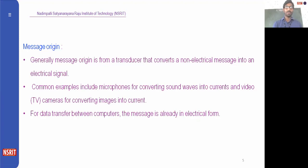Message origin generally comes from a transducer. A transducer is a device that converts a non-electrical message signal into an electrical signal. For example, a voice signal is a non-electrical message signal, and a transducer converts it into an electrical signal. Pictures or images are also non-electrical message signals that transducers convert into electrical signals. Common examples include microphones for converting sound waves into electrical currents, and video cameras for converting images into electrical current.